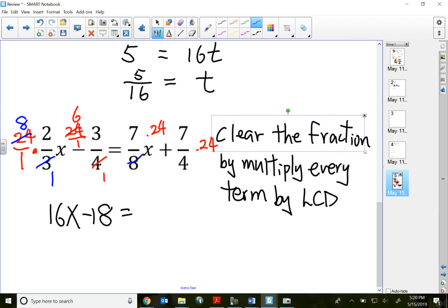Equals, again, 24 and 8 reducing to 1 and 3. So that will be 21x. Plus, this cancels out as 6. 7 times positive 6 is 42.